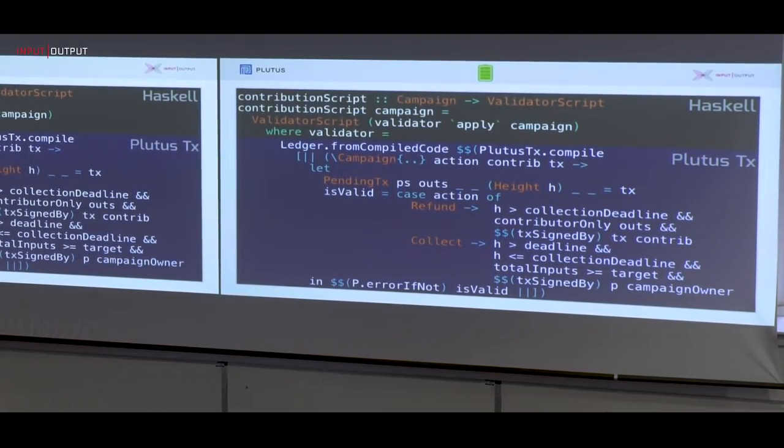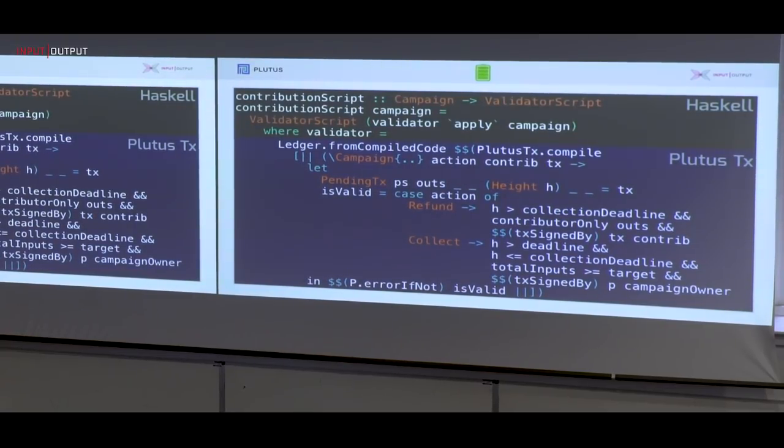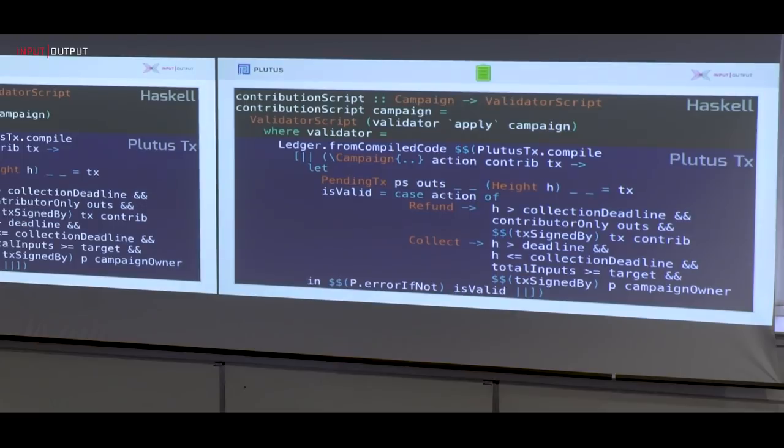If either of these two conditions is met, then transaction is good to go. Otherwise, we throw it away. So it's quite compact code. Of course, I appreciate if you're new to Haskell, it all looks like special characters. Once you get used to it, it's actually not hard to read. It's just a pure function.